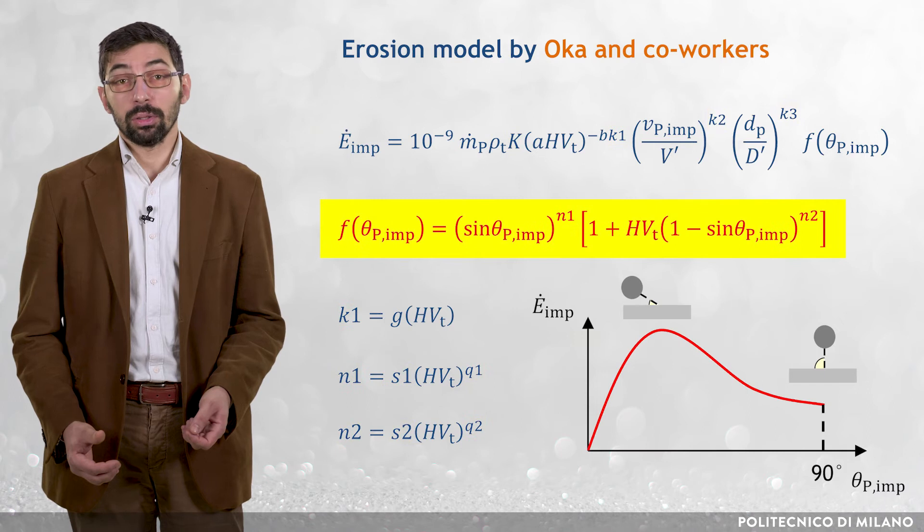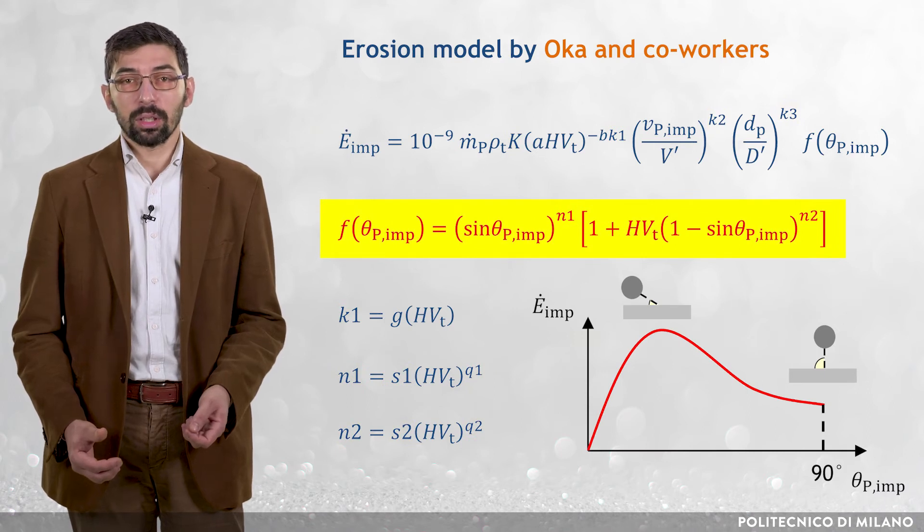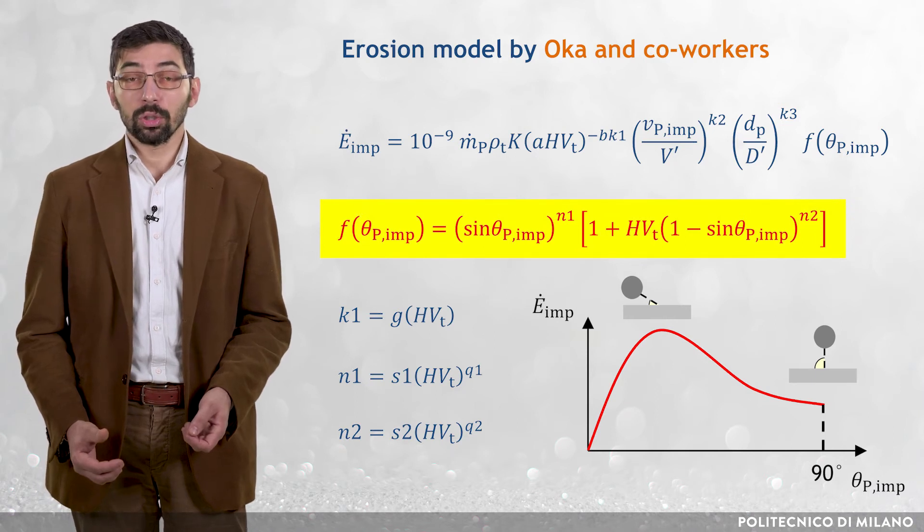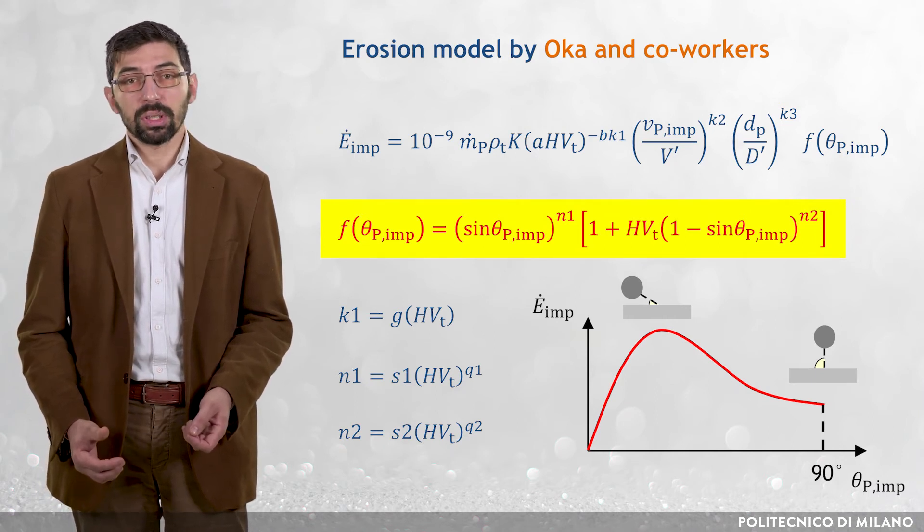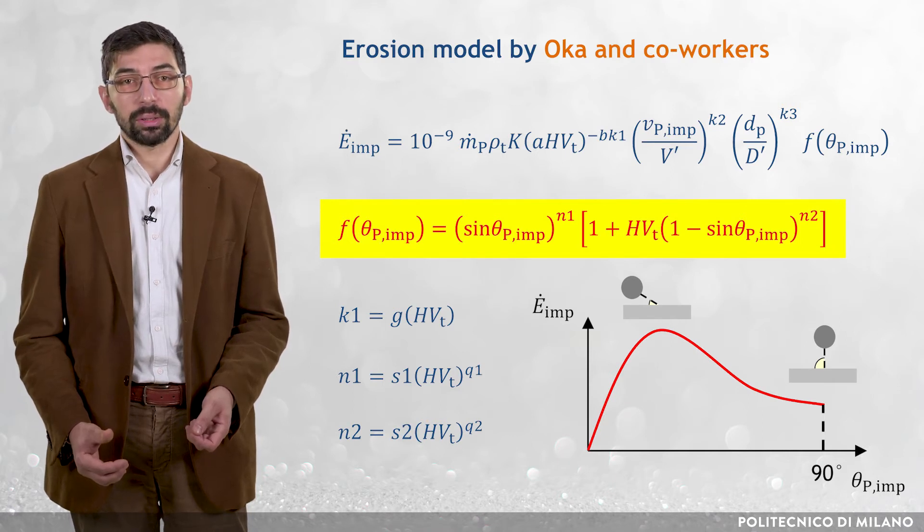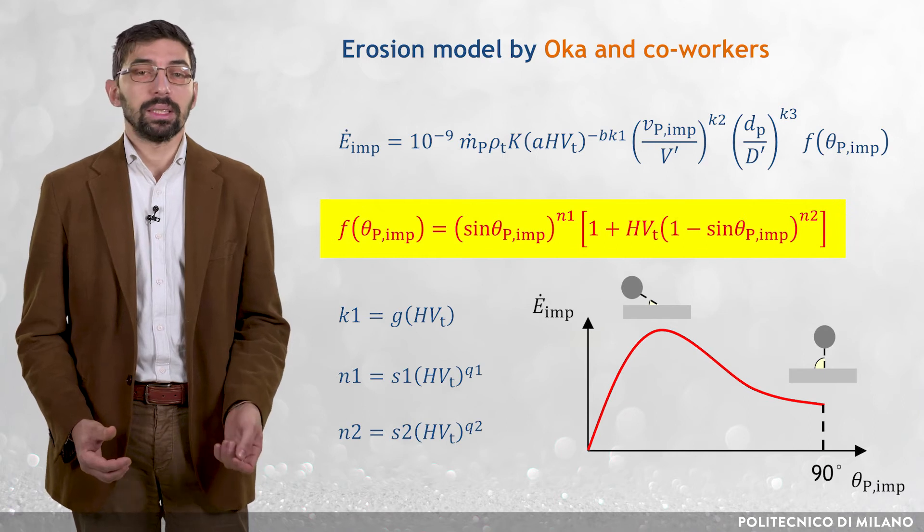Note that, in Oka model, the dependence of dot E-imp upon theta capital P-imp shows the typical non-monotonic trend observed for ductile materials, and that the impact angle function depends on the Vickers hardness of the target material.